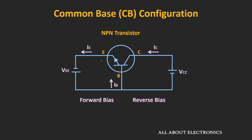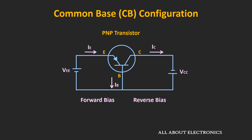For the NPN transistor, the emitter current will go away from the transistor, while the base current and the collector current will enter into the transistor. For the PNP transistor, the direction of the currents will get reversed — the emitter current will enter into the transistor, while the base and the collector currents will go away from the transistor.